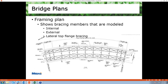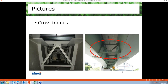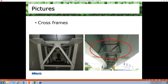At both ends, we have in-diaphragm. In the left-hand side picture, we can see a cross-frame inside a box girder, and the right-hand side picture shows external cross-frame members. We can also see an internal cross-frame member inside the box girder, and this one is in-diaphragm — external in-diaphragm.